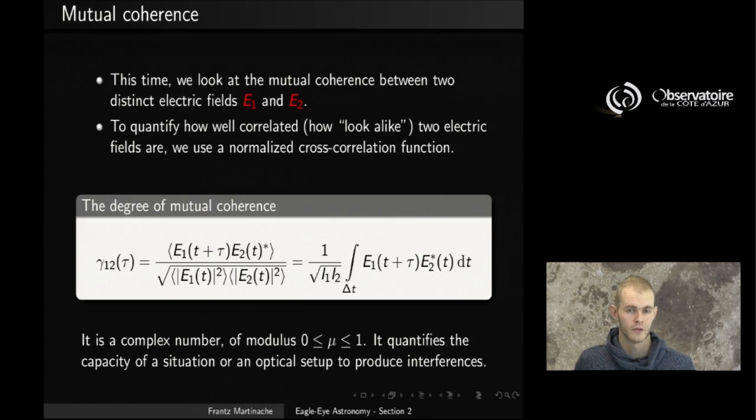But just like for the self-coherence, to quantify how well correlated or how look-alike those two electric fields are, we are going to use the same normalized cross-correlation function trick. And so we are going to introduce this new number, which we are going to call the degree of mutual coherence.